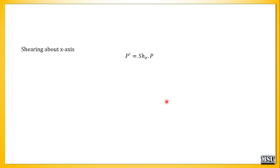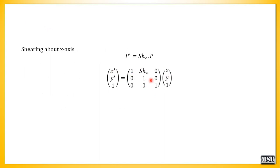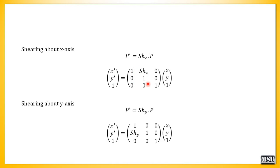We need a formula for shearing. Shearing about the x-axis: p' equals shx into p. If you perform shearing about the x-axis, the x-axis values are changed while y-axis values remain the same. So x' equals x plus y times shx, and y' equals y. Similarly, for shearing about the y-axis, the x value remains the same while y values are changed: x' equals x and y' equals shy times x plus y.